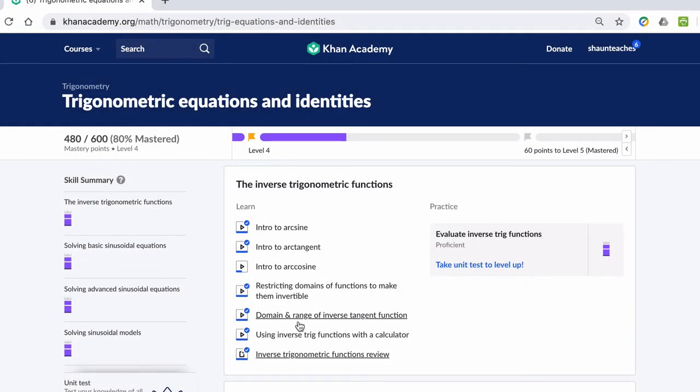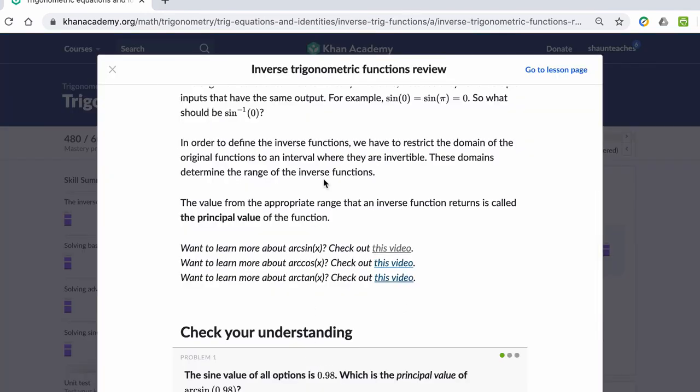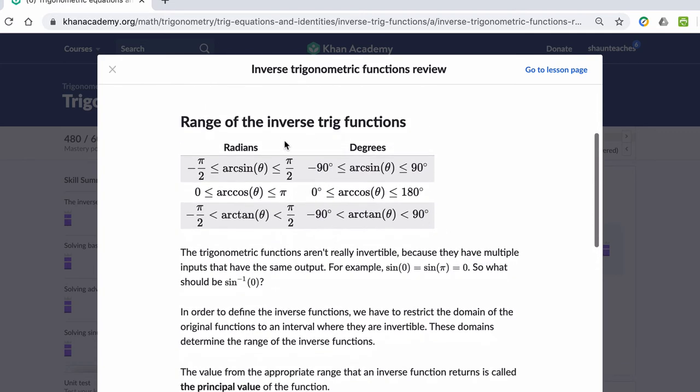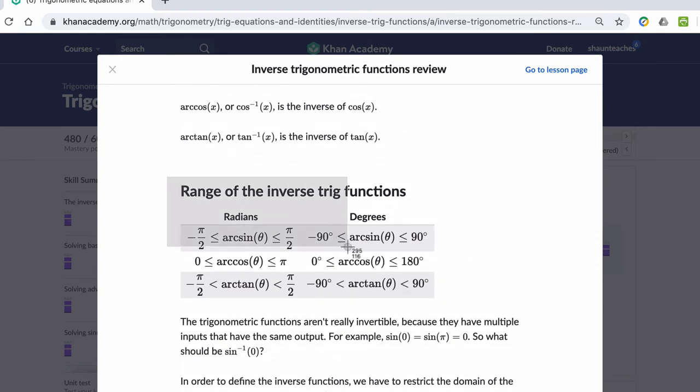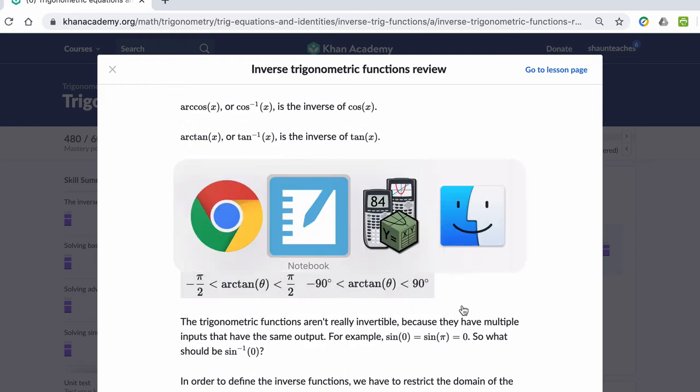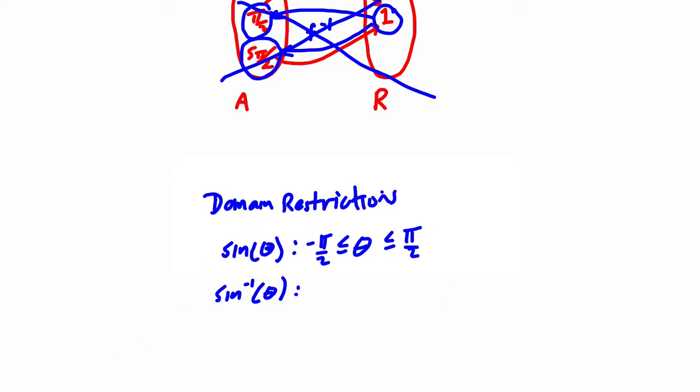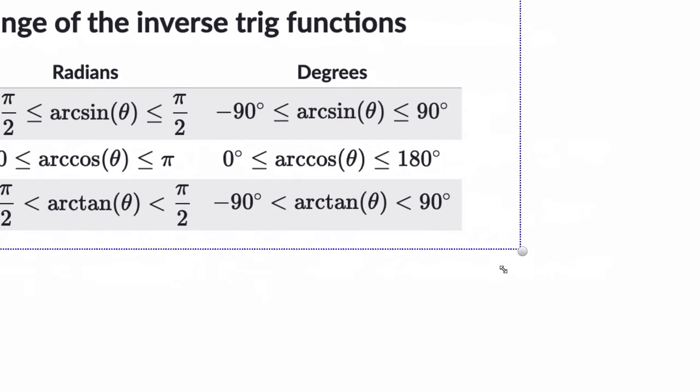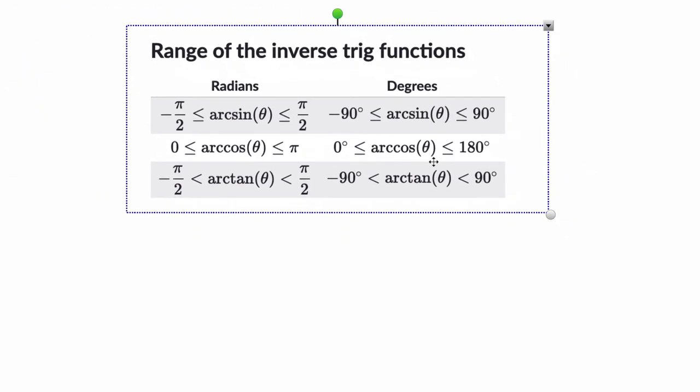But instead of writing it all out, let me just show you, here they have the inverse trig function review. There's a lot of cool stuff in here, but if you scroll up, or in my case up, you get this table. And what this table is showing us, let me just copy that, let me just erase what I wrote here. So what we have here is a table that summarizes the way we restrict the ranges of the inverse functions, or the domains of the functions themselves.